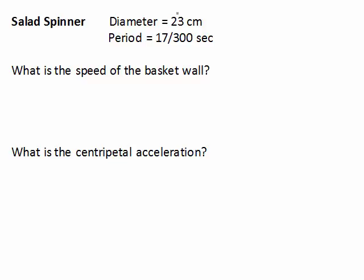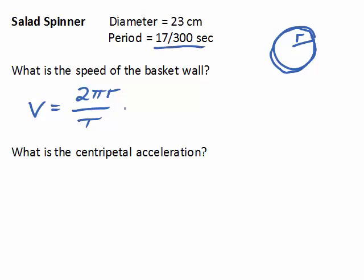We're going to do a couple quick calculations here. And we're going to calculate the speed of the basket wall. And then also what is the centripetal acceleration experienced by the lettuce. So let's start off with the speed calculation. And speed is distance over time. Now in the case of something going around in a circle, the distance is the circumference of the circle. And the circumference of a circle is 2π times the radius of the circle. And we're going to use a capital T to represent the period. That is the time it takes for the basket to turn once.